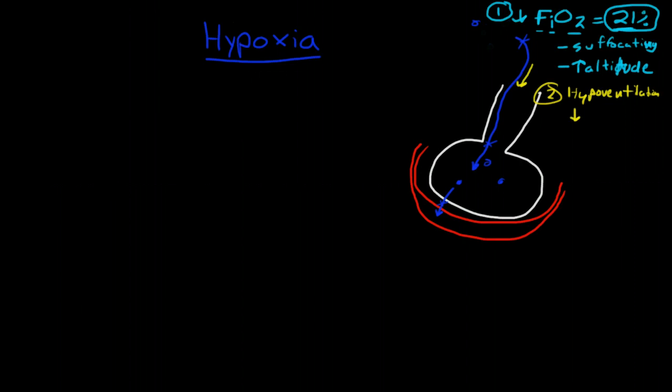Because it diffuses much faster, actually CO2 levels are going to increase in the bloodstream. Because the CO2 is going to build up very quickly in the alveolar space because of its rapid diffusion, and then only after a few minutes later is the oxygen level going to drop. So that's the second thing that could happen.